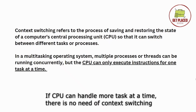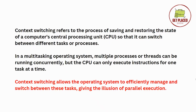But you need to remember that the CPU can only execute instructions for one task at a time, and that is the reason context switching exists. If the CPU could handle more tasks at a time, there would be no need for context switching. From one process to another, the CPU shifts and comes back once the process is done. Context switching allows the operating system to efficiently manage and switch between these tasks, giving the illusion of parallel execution.